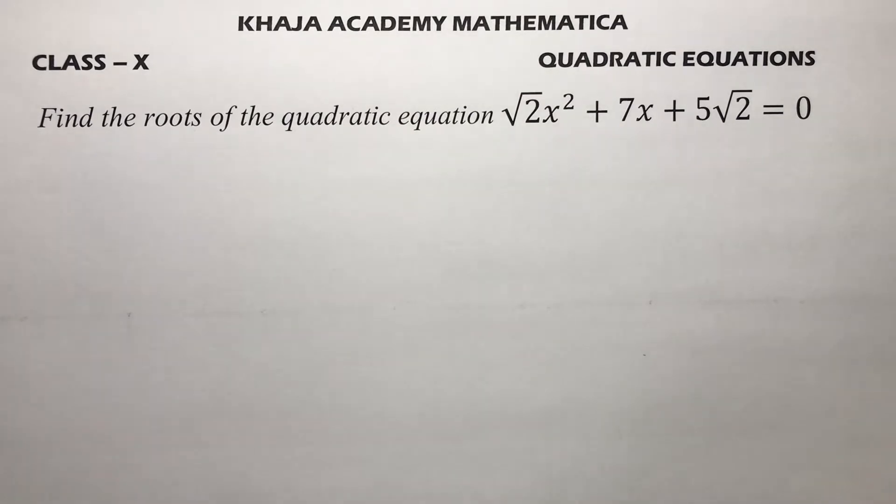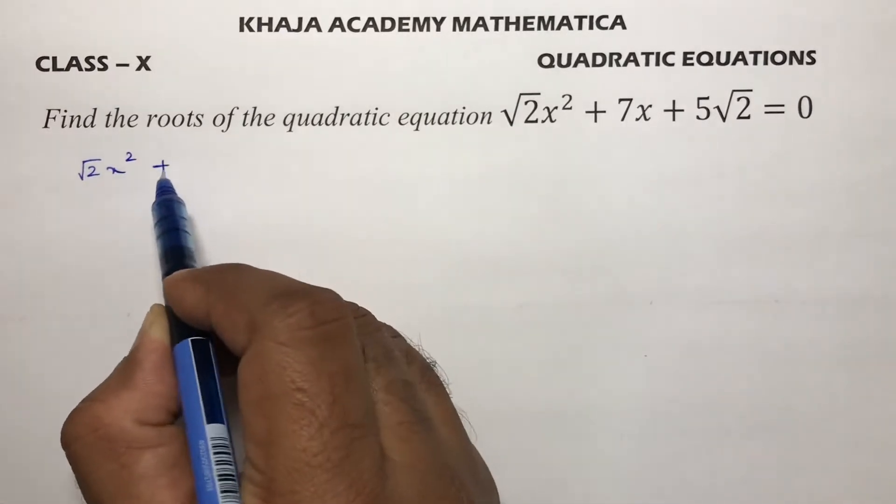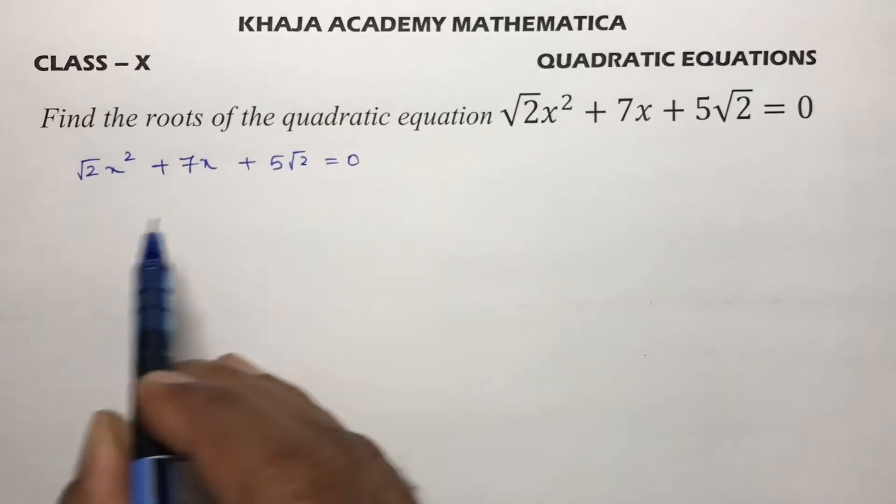Find the roots of the quadratic equation √2x² + 7x + 5√2 = 0.